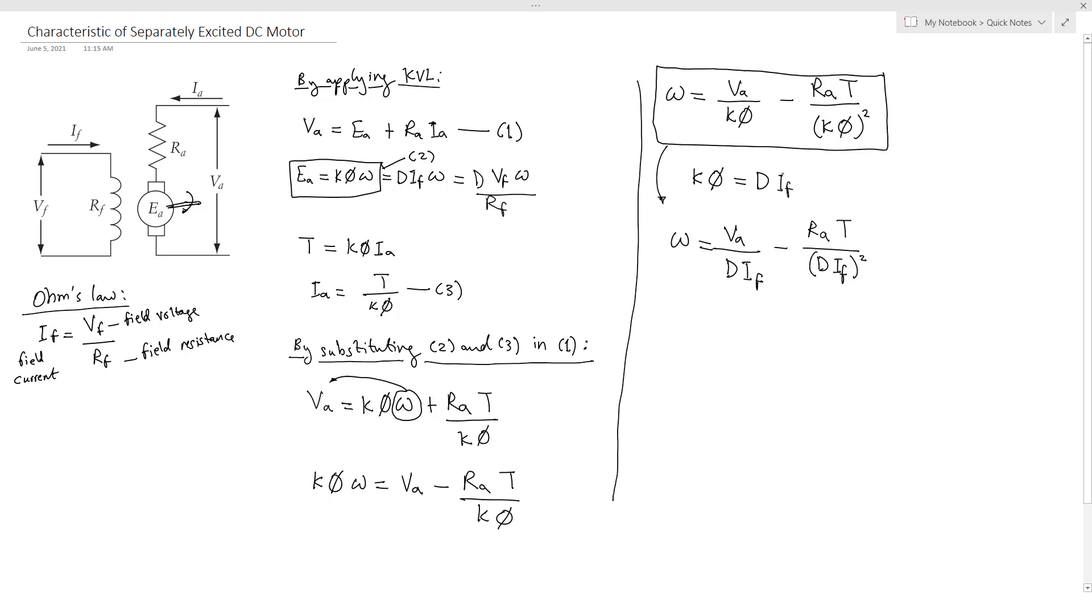National Instrument Multisim software, which is a very important engineering software. So this is the other equation that can be used to represent the speed torque characteristic of a separately excited DC motor.